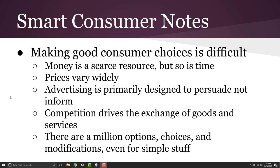Because competition is driving the exchange of goods and services, there are lots of companies offering lots of different options for most consumer goods and services. That isn't true in certain areas, and in those areas you're out of luck — like, say, who to get your internet from.